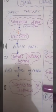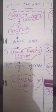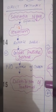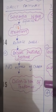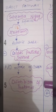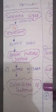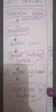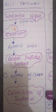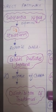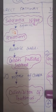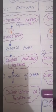Starting with the direct pathway, it involves four structures. Starting with the substantia nigra, it will secrete dopamine which will act on the D1 receptor. This dopamine will make the striatum release GABA. This GABA will act on the Globus pallidus interna. The Globus pallidus interna is inhibited because GABA is an inhibitory neurotransmitter.